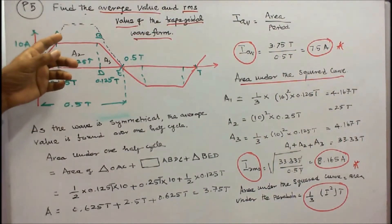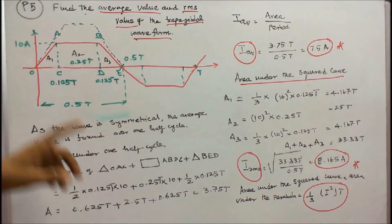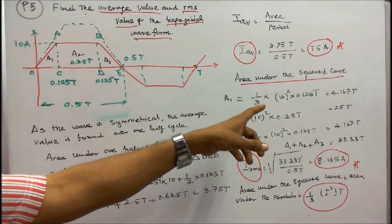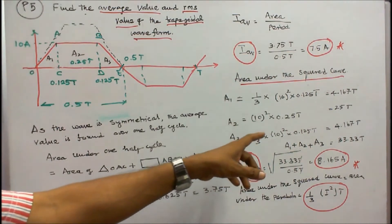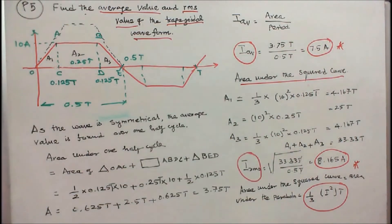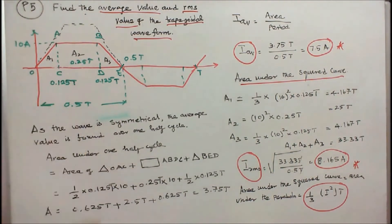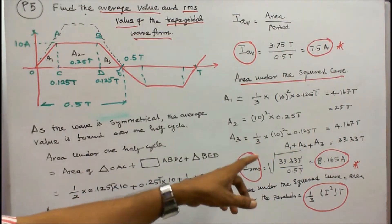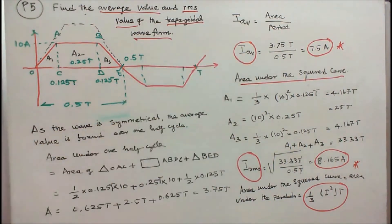Next, we find the area under the squared curve. For the parabolic sections: A1 equals (1/3 times 100 times 0.125T) equals 4.167T. A2 equals (100 times 0.25T) equals 25T. A3 equals (1/3 times 100 times 0.125T) equals 4.167T. Total area is A1 plus A2 plus A3 equals 33.33T. I RMS equals the square root of 33.33T divided by 0.5T, which gives I RMS equal to 8.165 amps.